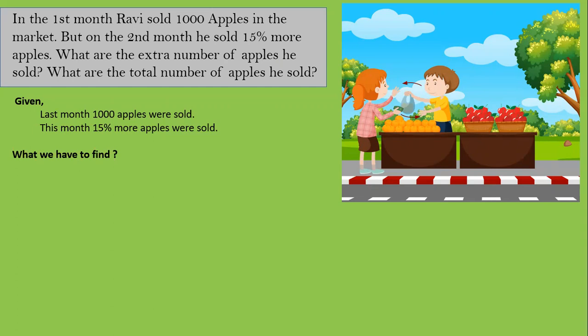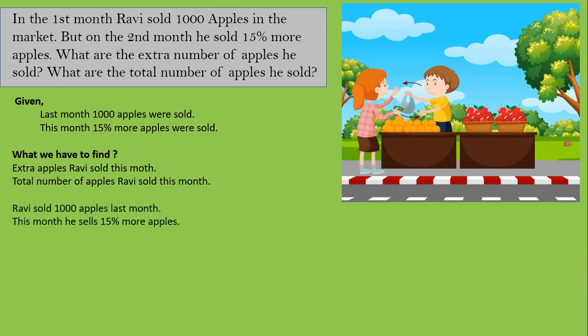We need to find: what is the extra number of apples he sold, and what is the total number of apples he sold? Ravi sold 1000 apples last month; this month he sells 15 percent more. So the extra apples are 15 by 100 into 1000, which equals 150 apples.